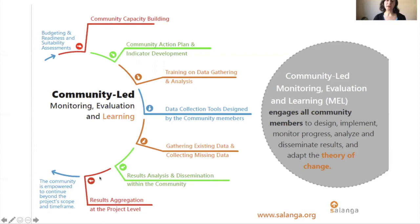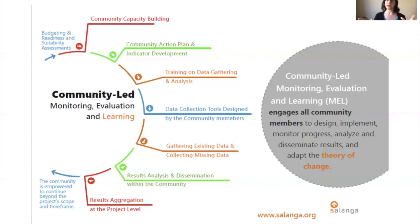Then there's a process of aggregating the results at the project level. This can be a bit of a challenge because communities will have possibly defined different goals, activities, and indicators — they might be monitoring different kinds of strategies. However, there is the possibility of assigning a numerical scale and being able to aggregate that way, as illustrated with an example in module two.